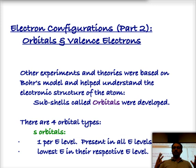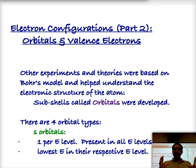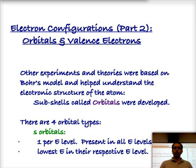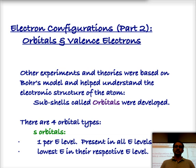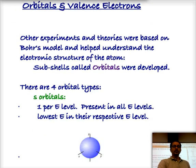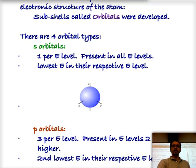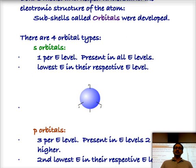Orbitals can be defined as regions of space in which we can find an electron. Around atoms nowadays we have defined that there are four basic types of orbitals, and we're going to be looking at what each one of those four types of orbitals are and what they look like. The first type of orbital is the S orbital.